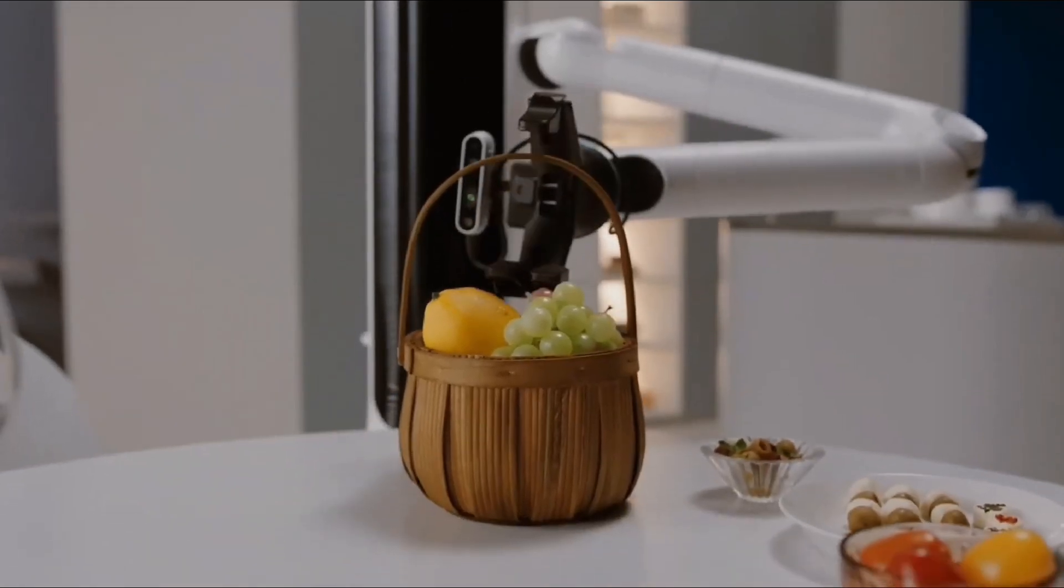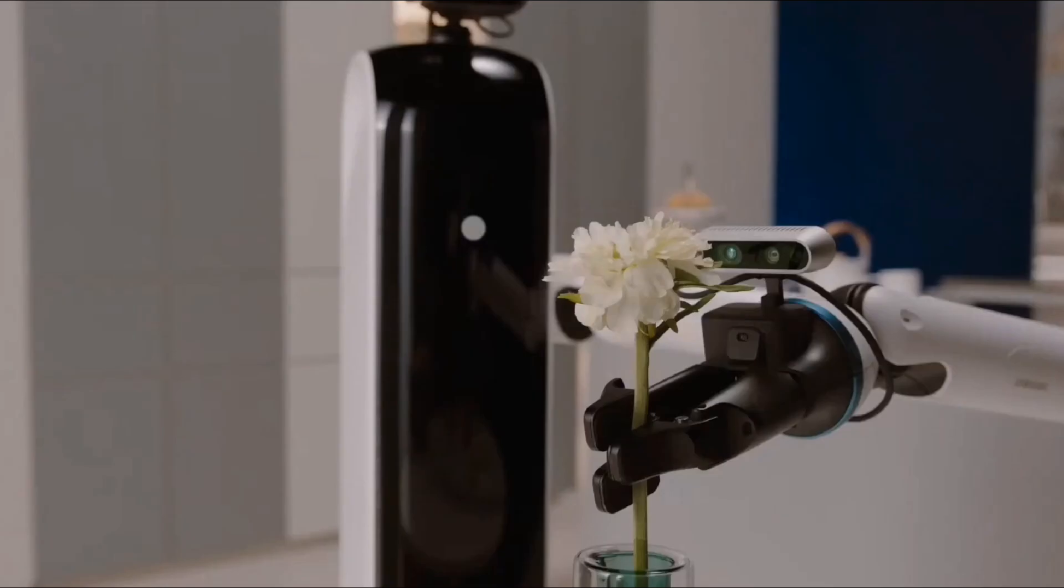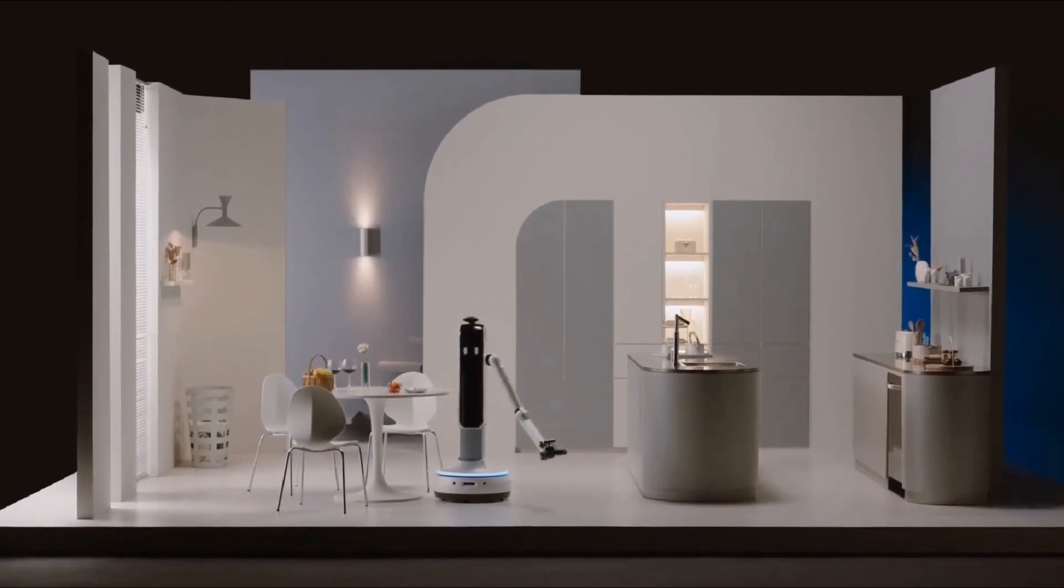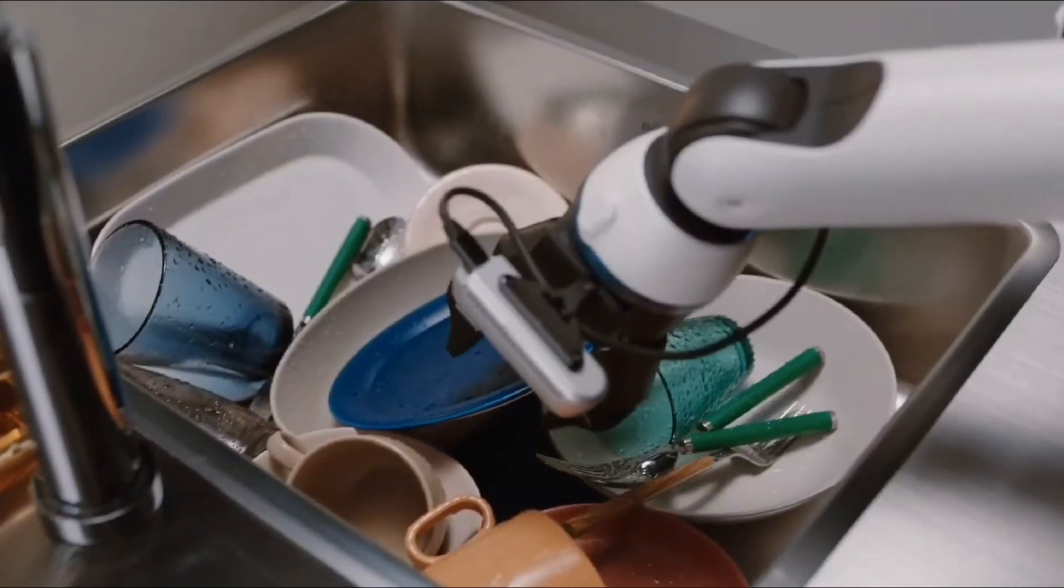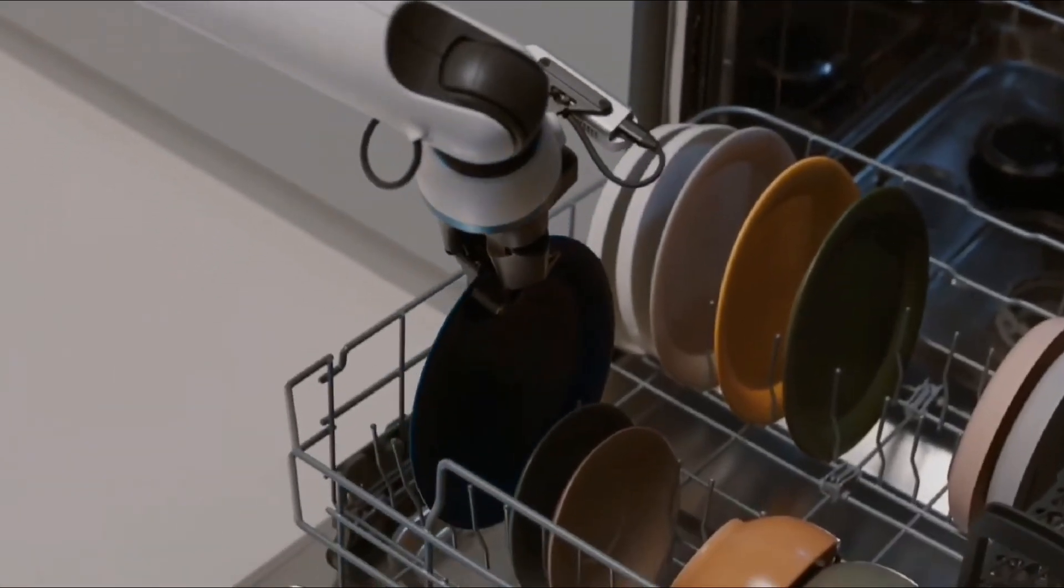Equipped with advanced sensors and AI-driven perception, Bot Handy can recognize various objects and adjust its grip to handle delicate items like glassware or heavier items like groceries. This adaptability makes it an ideal household companion, capable of performing tasks autonomously while interacting naturally with its environment.